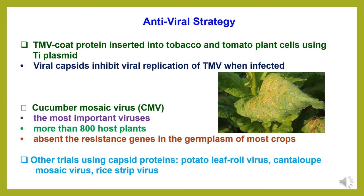Antiviral strategy with genetic engineering. Tobacco mosaic virus coat protein was inserted into tobacco and tomato plant cells during Ti plasmid transformation. Viral capsids inhibit viral replication of tobacco mosaic virus when infected. Cucumber mosaic virus is one of the most important viruses in agriculture, with more than 800 host plants. The resistance gene is absent in the germplasm of most crops, so by genetic engineering an antiviral strategy has been developed. Other trials using capsid proteins of potato leaf roll virus, cantaloupe mosaic virus and rice stripe virus are underway.